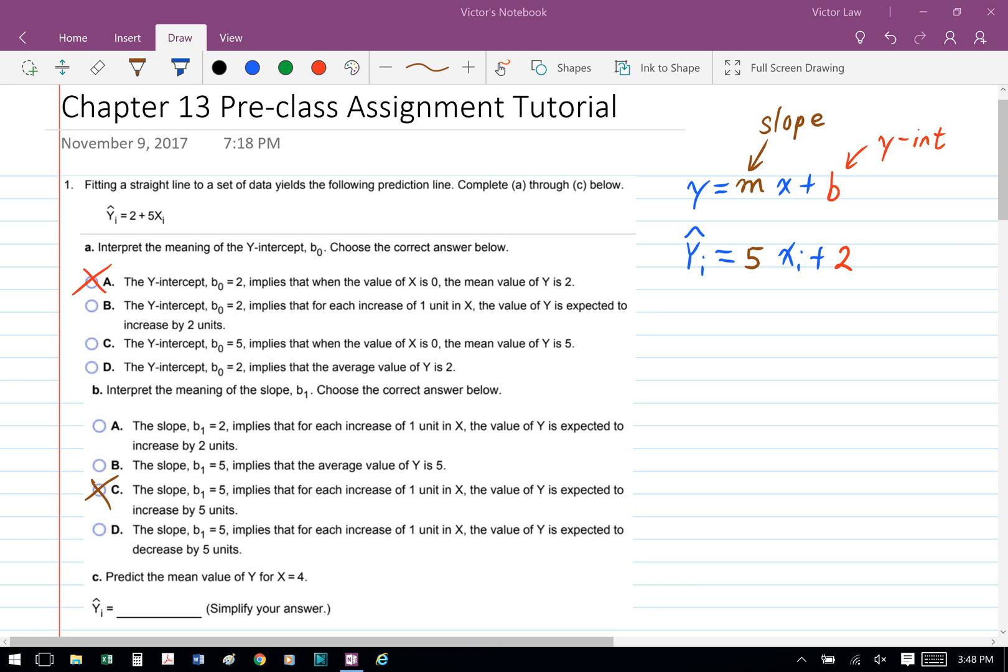That is Part A. And then for Part B, we know that the slope is 5. And what that means is that for each increase of 1 unit in x, the y value is expected to increase by 5 units.